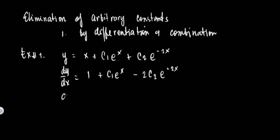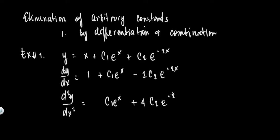Differentiate once again. The second derivative of y with respect to x equals: the derivative of 1 is zero, plus the derivative of c1*e^x is c1*e^x, then the derivative of -2c2*e^(-2x) is +4c2*e^(-2x). Let's call these equation 1, equation 2, and equation 3.